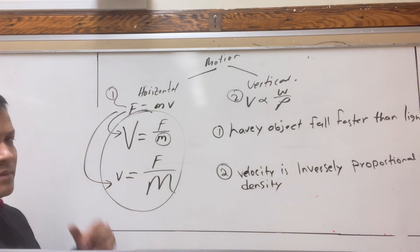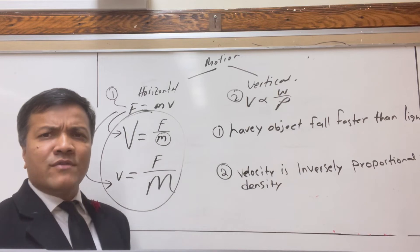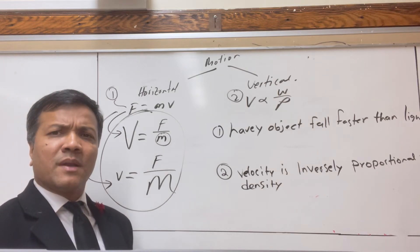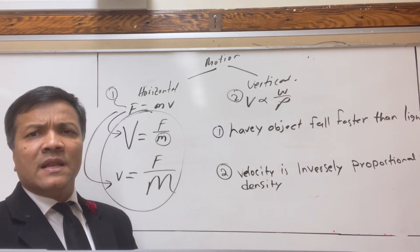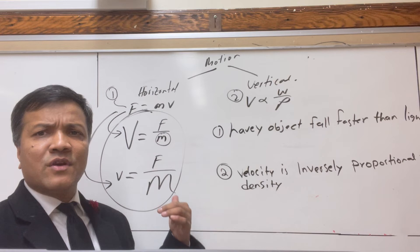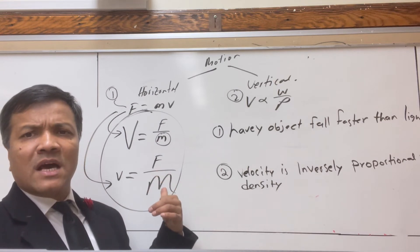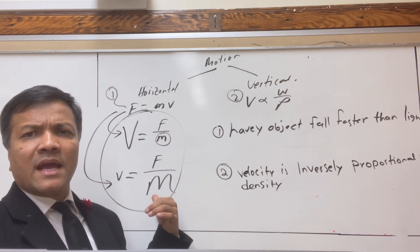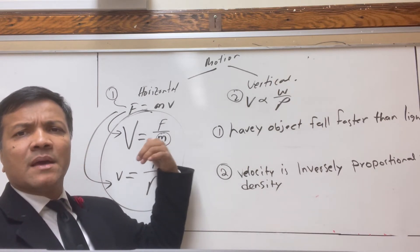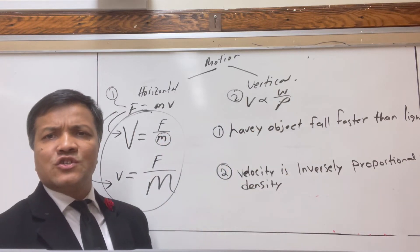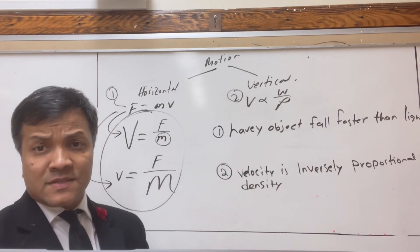His idea is that for a heavy object, you have to apply more force, and for a light object, you apply less force. A heavy object has less velocity, and a light object has a bigger velocity.